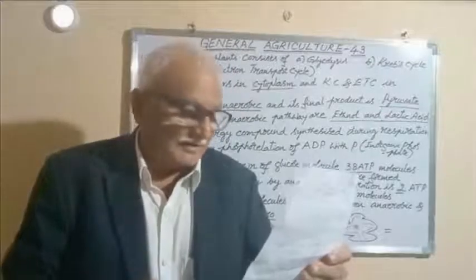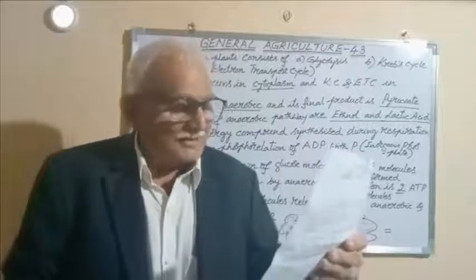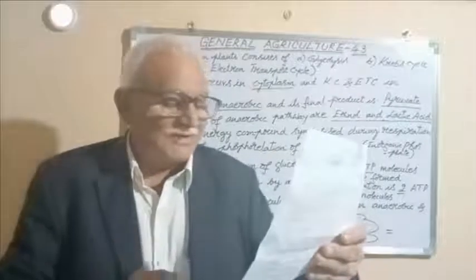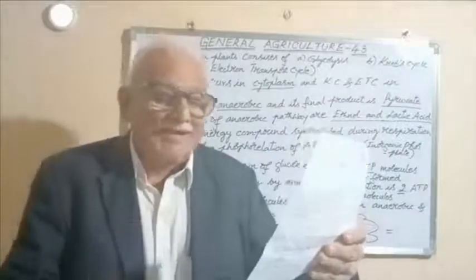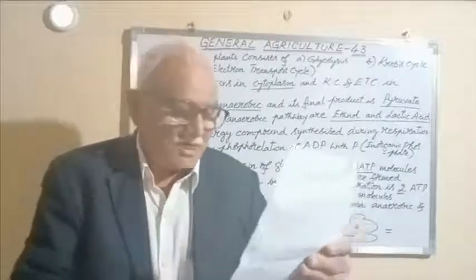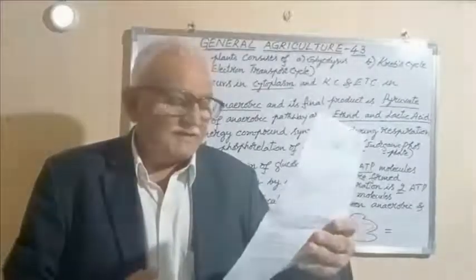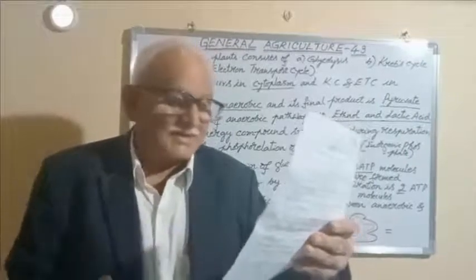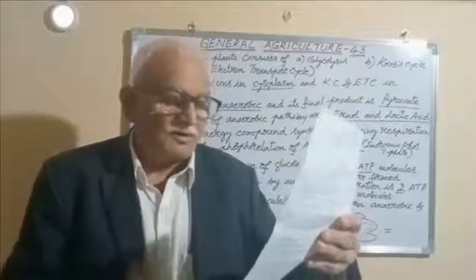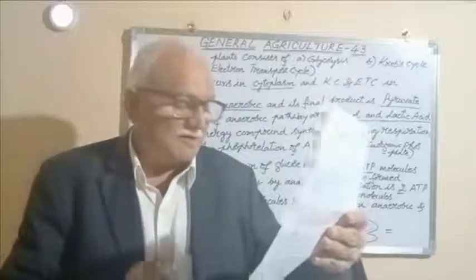Light reaction of photosynthesis takes place in grana and dark reaction in stroma. Photosynthesis is an oxidation-reduction process. The first stable product of photosynthesis is a three-carbon compound, phosphoglyceric acid (PGA).